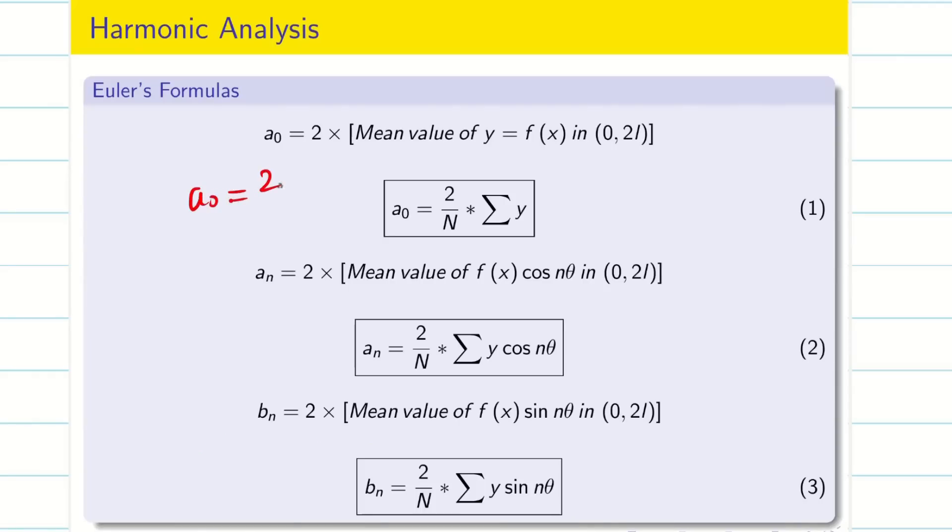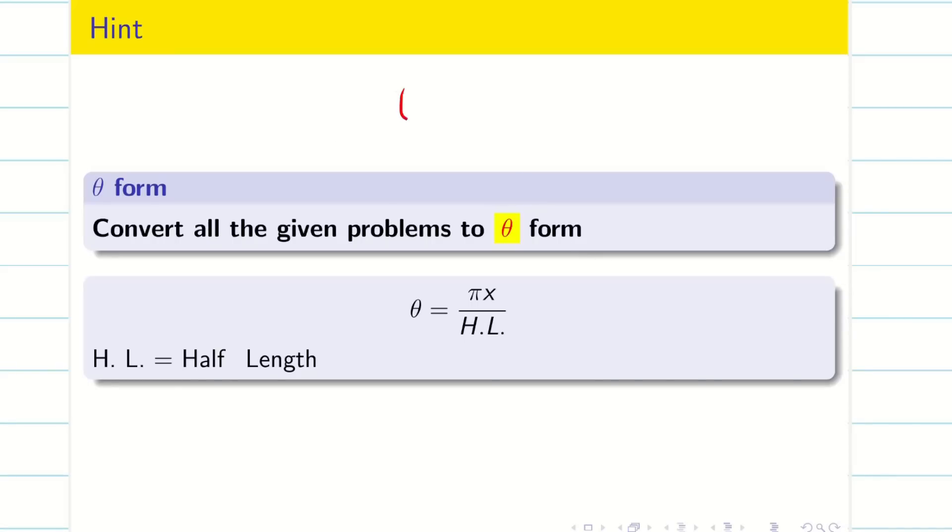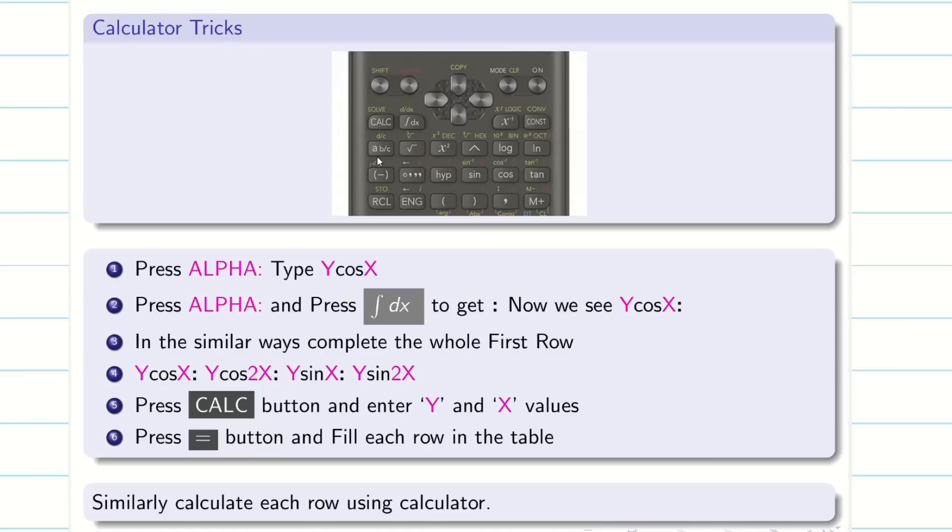Before going into the session, let's recall some basics from part 1. To find a0, use the formula 2 by n summation y. If you need a1, use 2 by n summation y cos theta. If you need a2, use 2 by n summation y cos 2 theta, and so on. Similarly for b1, b2, use these formulas. As I said, whatever the type, convert it into degree mode which is very helpful for solving with your calculator. The formula is pi x divided by half length. Remember the calculator tricks: enter the data in a single row, press calc button, and fill the table in a simple way.